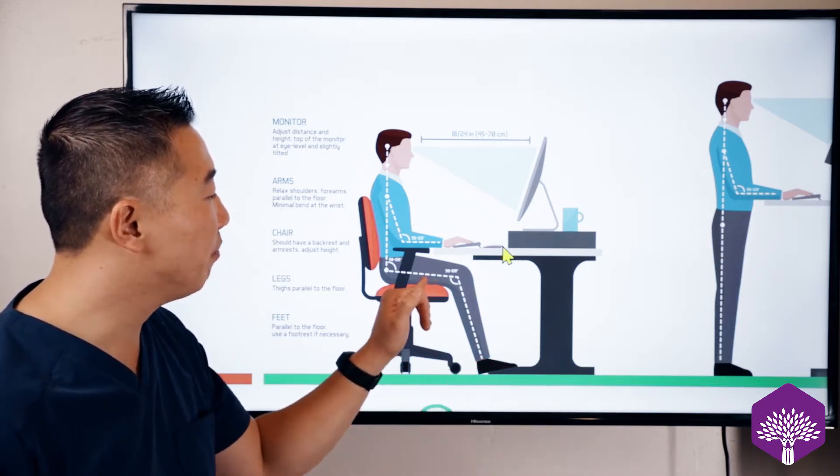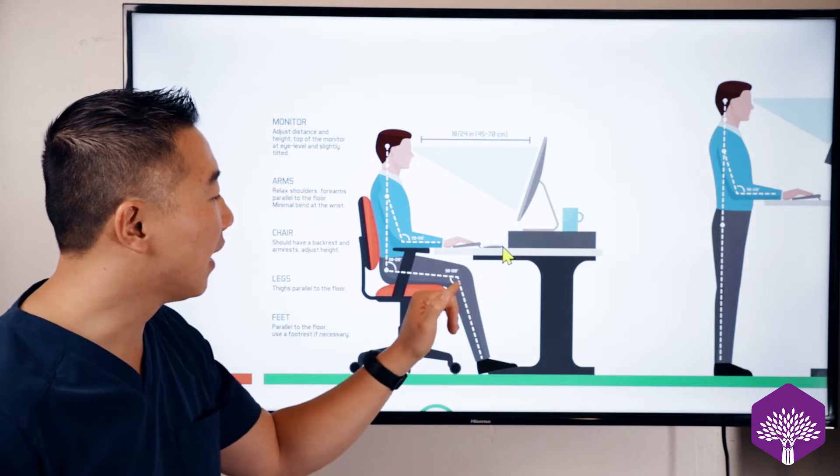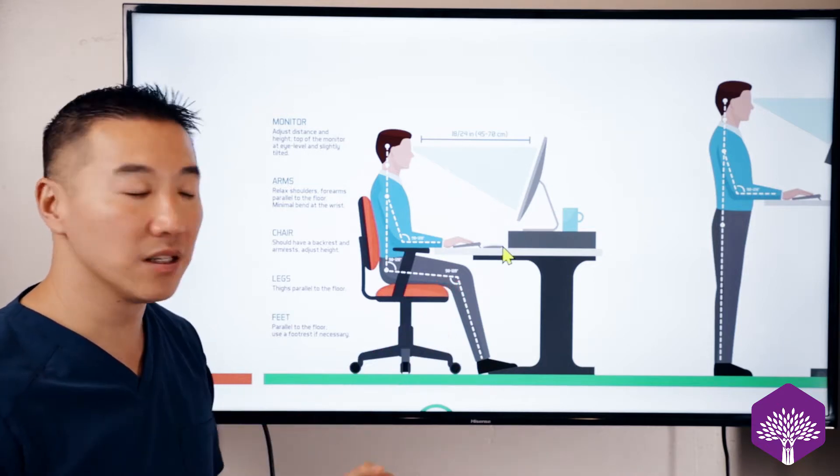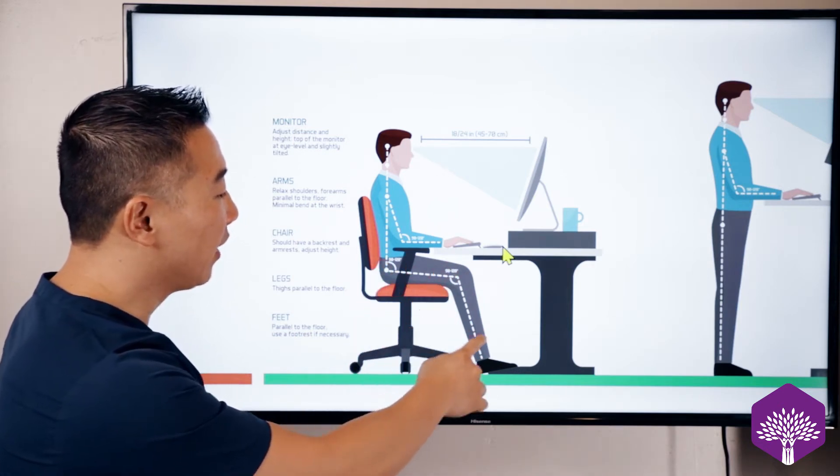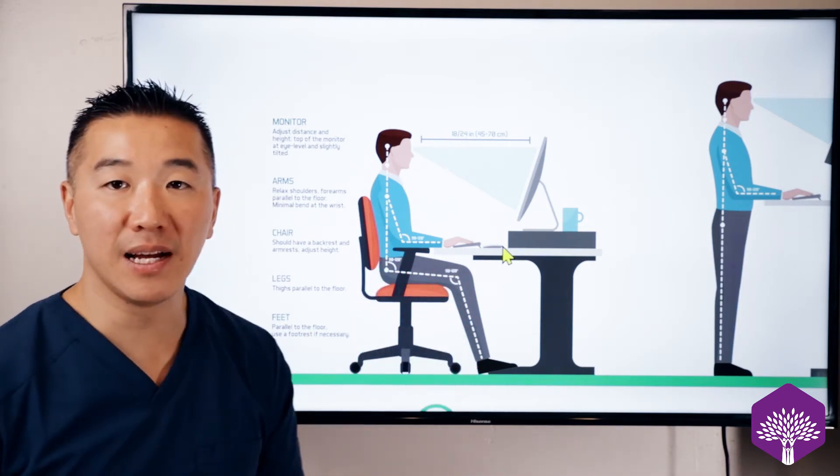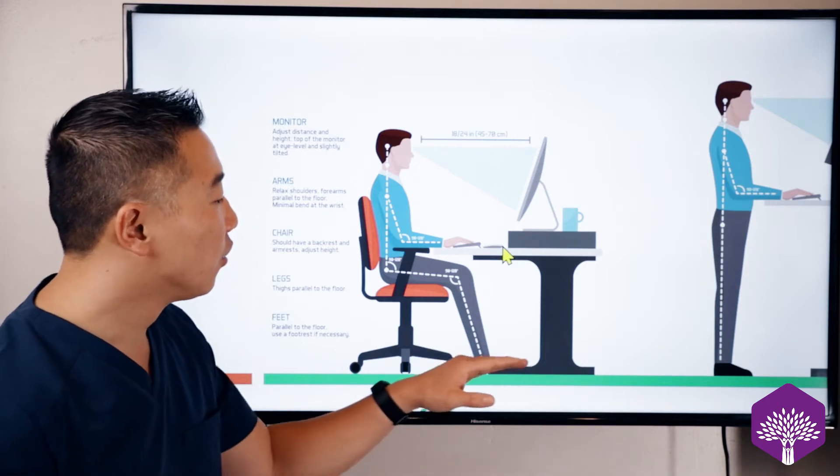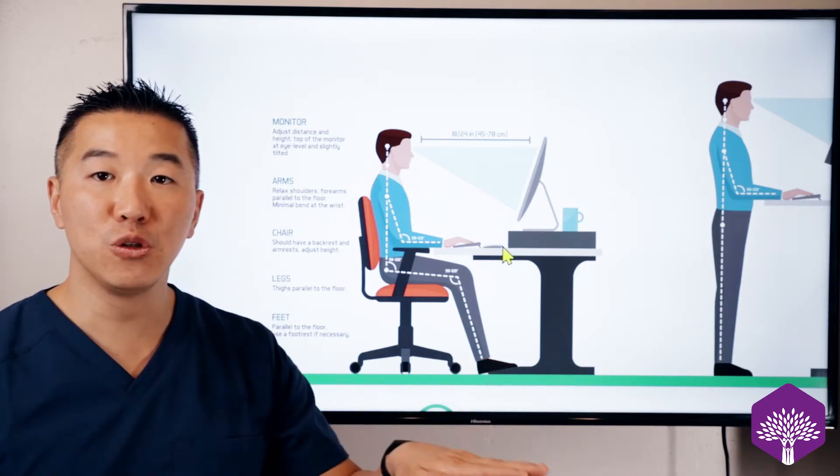Your knees should be right around 90 to 120 degree angle. That is the distance and the degree between your upper leg and your lower leg should be at about 90 to 120 degrees. Your foot should be at neutral position.